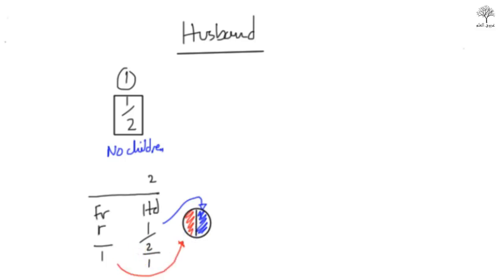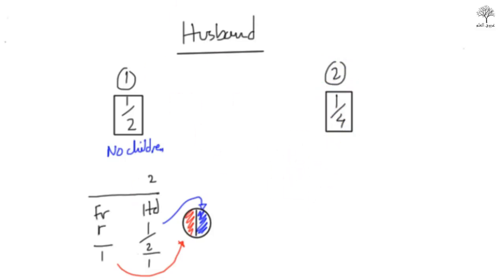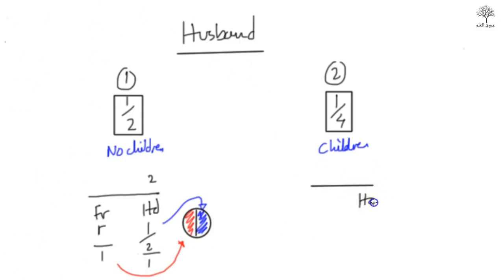That is the husband's share when there are no kids involved — the wife has died and left no children behind. Next, the second scenario: he receives a quarter of whatever is left. This is reduced because there are children involved. Whether those children are his or from another marriage doesn't matter — so long as there are children, the husband gets a quarter.